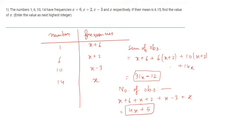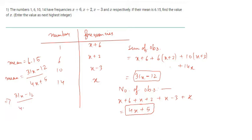The mean is given as 6.15. We know that mean equals sum of all observations divided by number of observations, so 31x minus 12 divided by 4x plus 5 equals 6.15. Solving this equation gives x equals 6.67. But the question asks for the next highest integer of 6.67, which is 7. So the answer is 7.